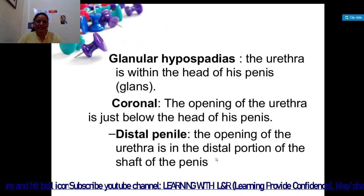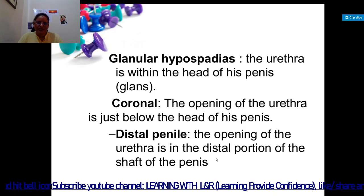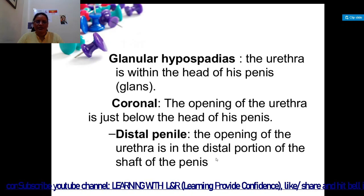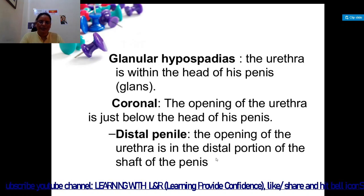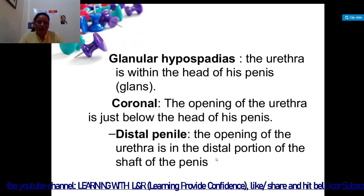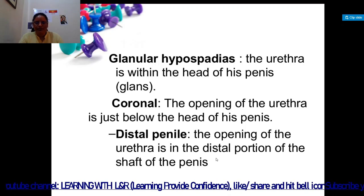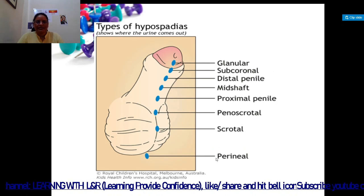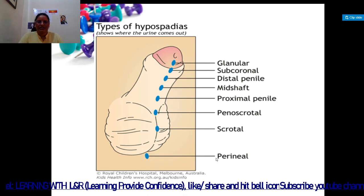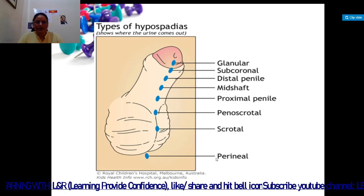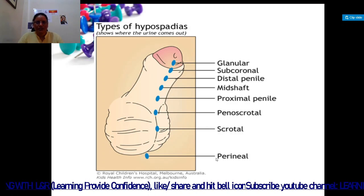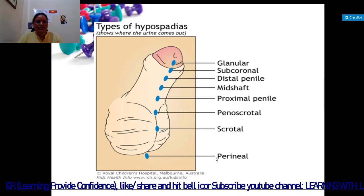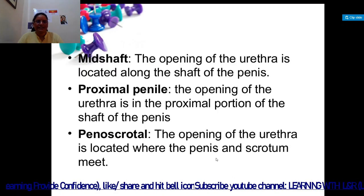The middle form includes mid-shaft and proximal penile types. The posterior form includes penoscrotal, scrotal, and perineal types. Glandular hypospadias means the urethra is within the head of the penis. Coronal means the opening is just below the head. Distal penile means the opening is in the distal portion of the shaft, away from and below the normal opening.